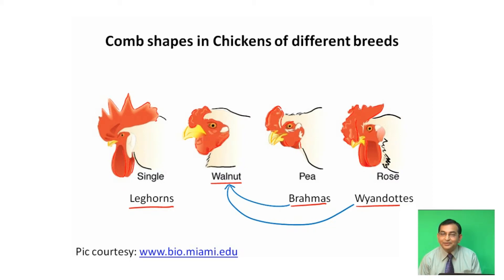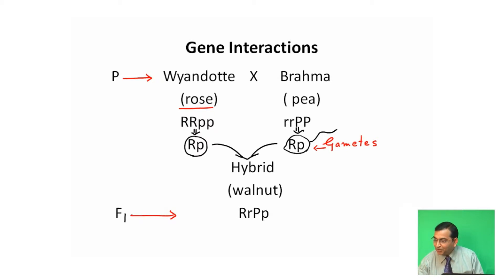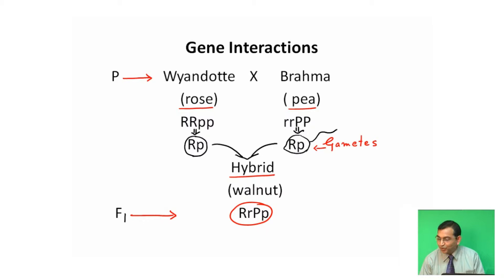Bateson and Cunet carried out a breeding experiment with these domestic breeds of chickens. When Wyandottes with rose comb were crossed with Brahmas with pea comb, in the F1 generation, the hybrid obtained was a walnut-shaped comb. Here, two dominant genes are present: R and P.